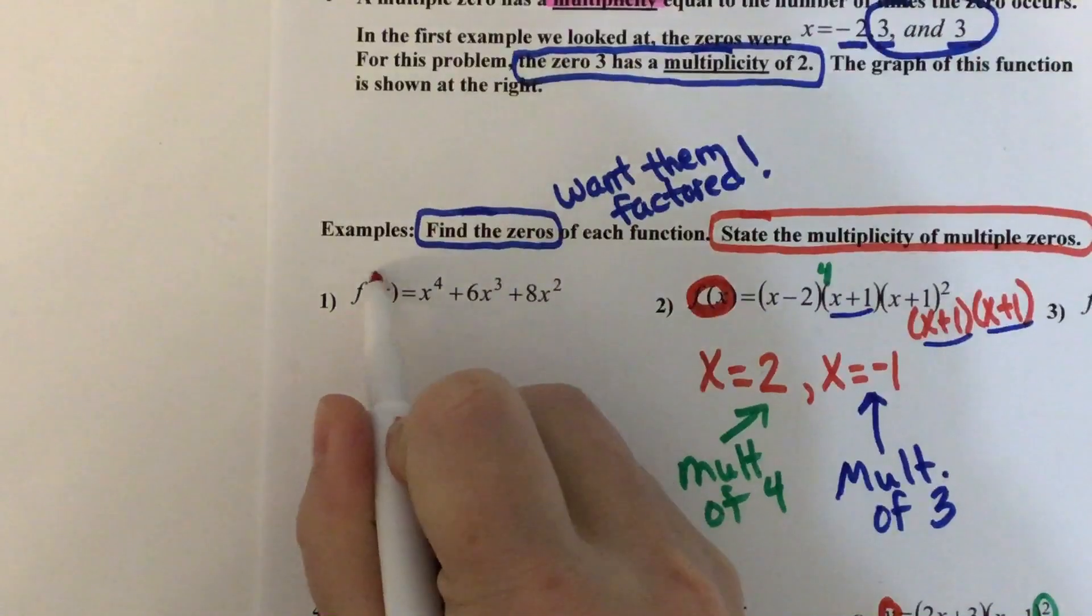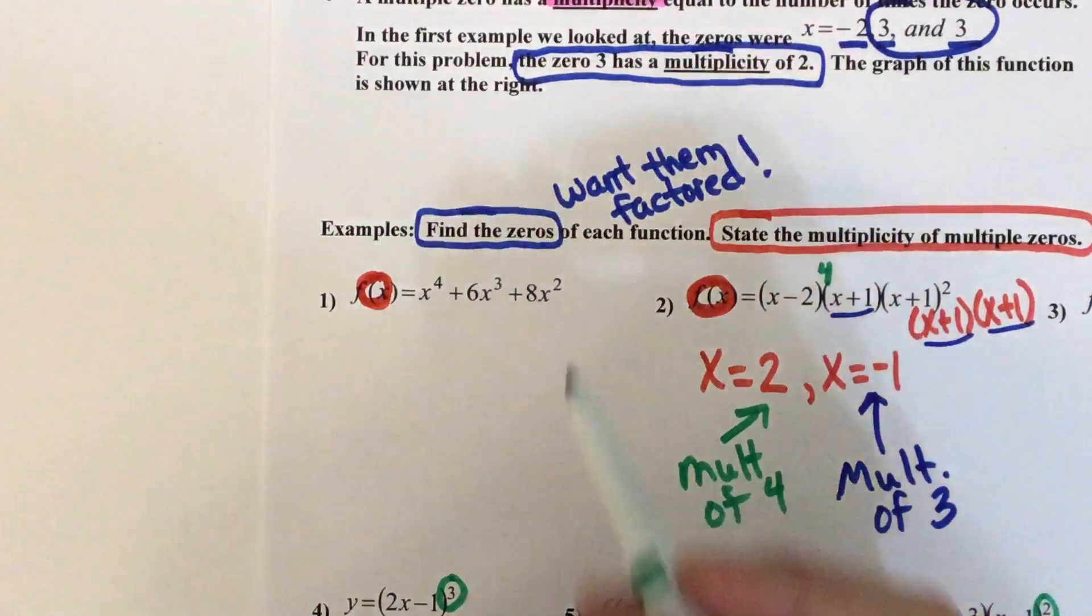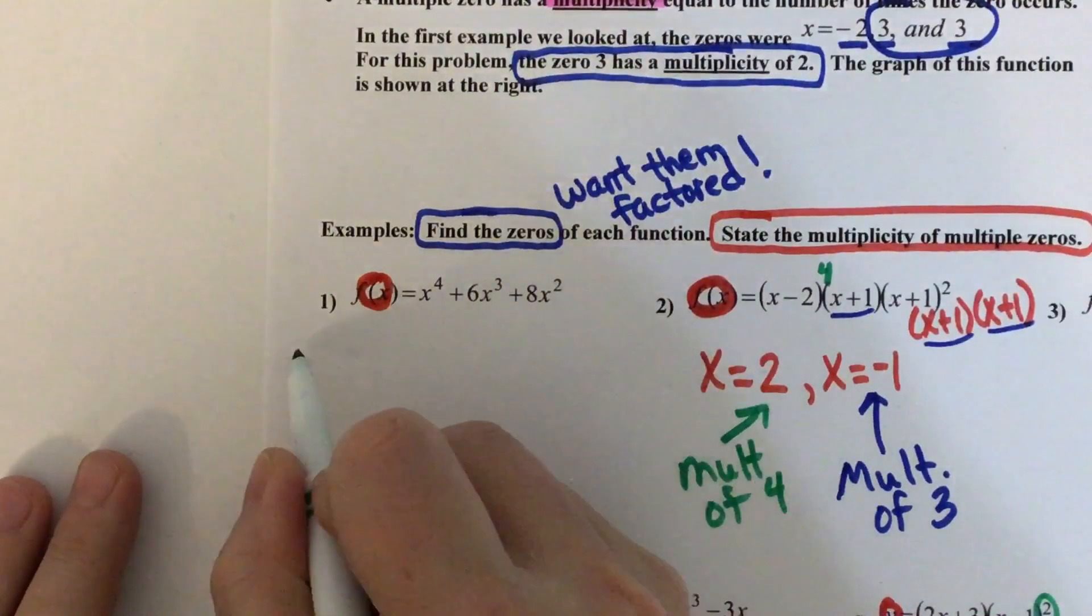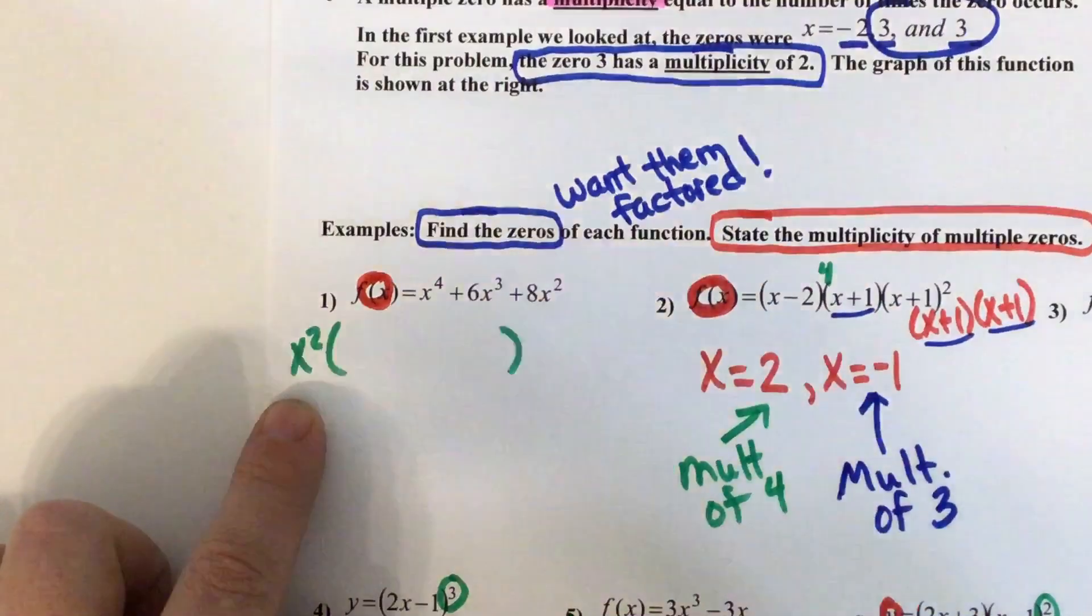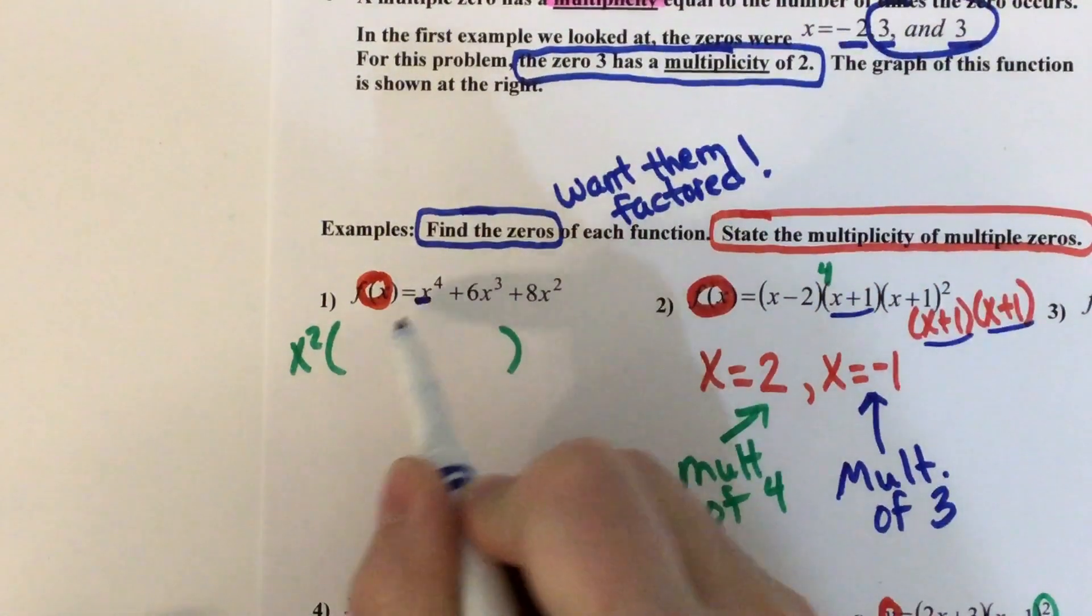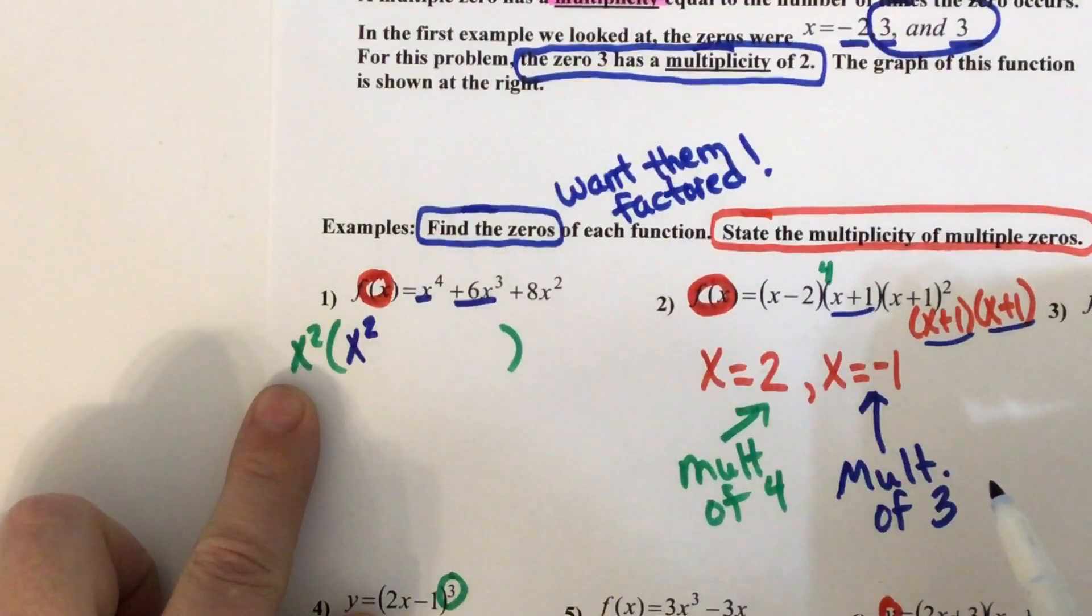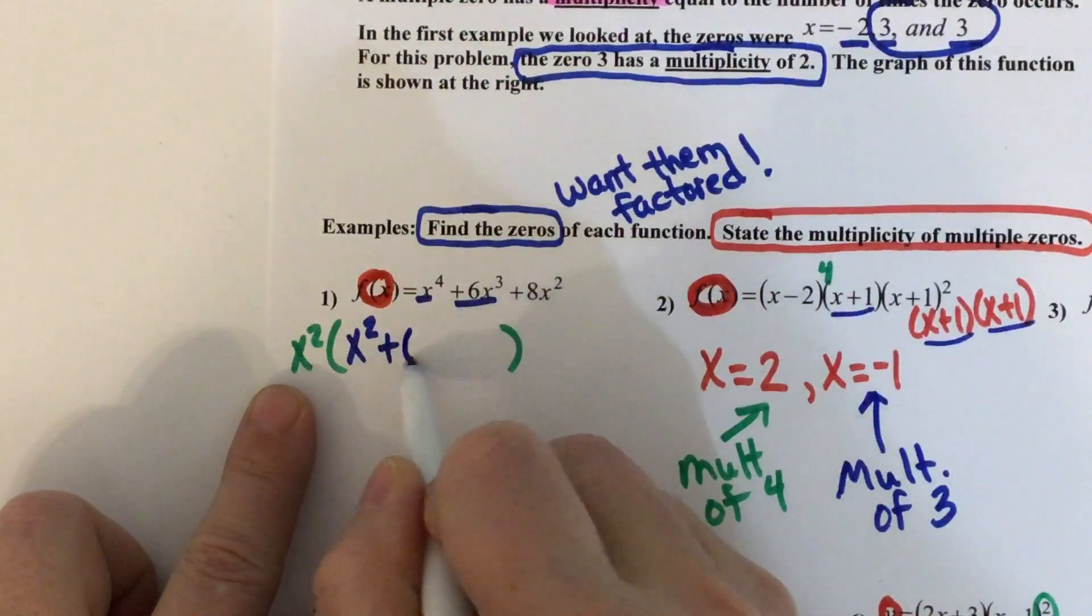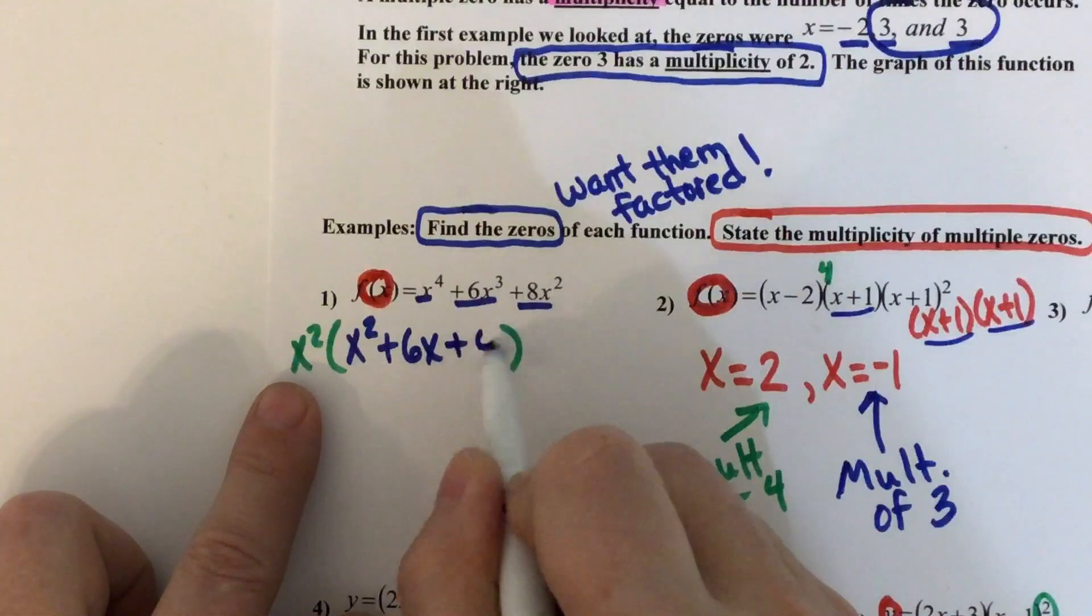If they're not factored, we have to factor them. So this takes us back to our previous lesson. If I was to factor this problem, first thing I always look for is a GCF. The GCF is x squared. Build your parentheses. x squared times what makes x to the fourth? x squared. x squared times what makes 6x cubed? 6x. x squared times what makes 8x squared? 8.